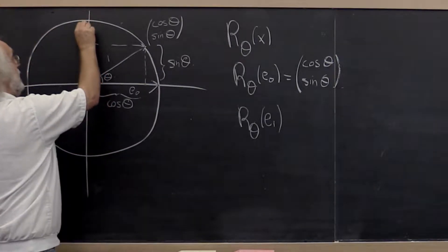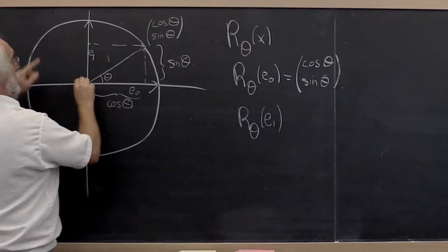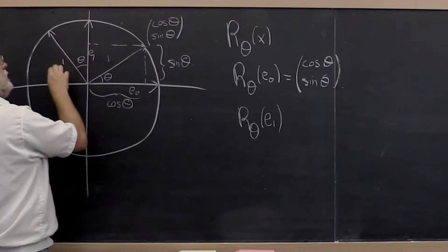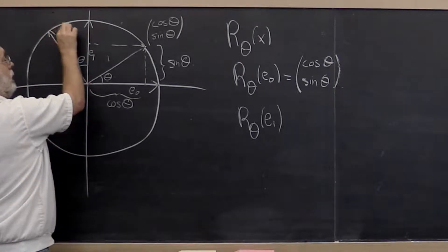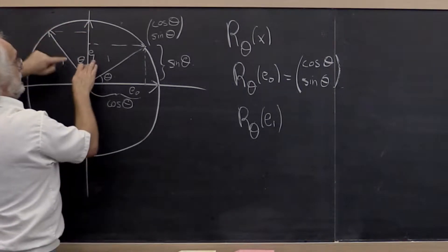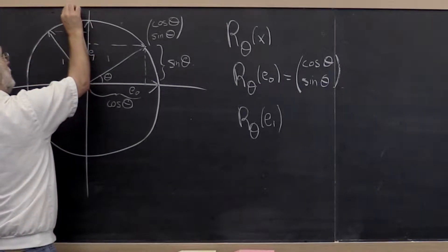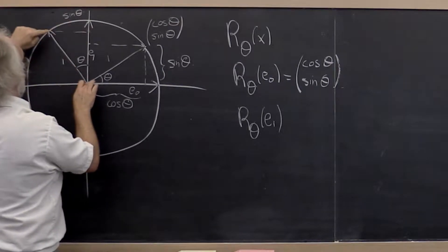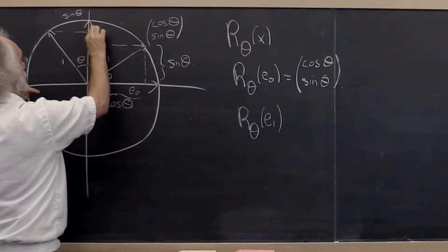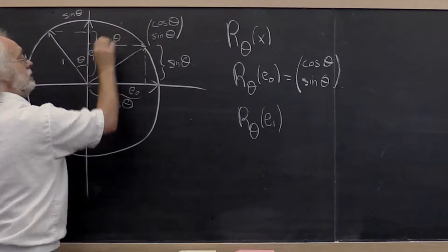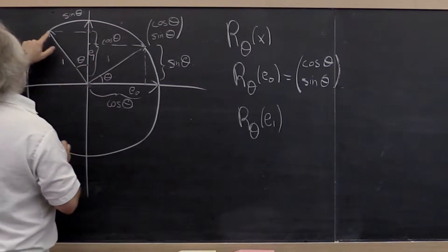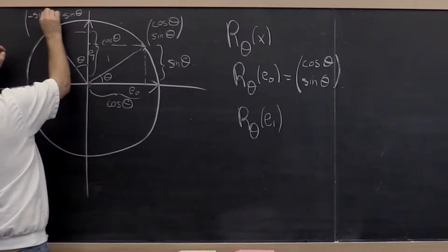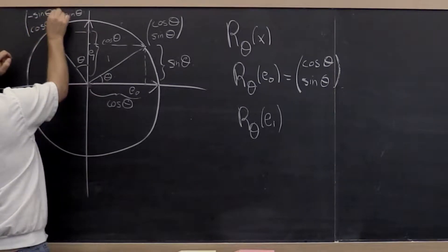Now what if we take e1 through the same angle theta? It's still of length 1. The vertical component divided by 1 equals sin(theta), and the horizontal component is cos(theta) — but now it points in the negative direction. So the rotated e1 is the vector [-sin(theta), cos(theta)].